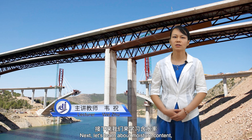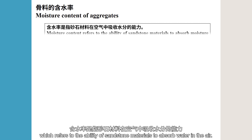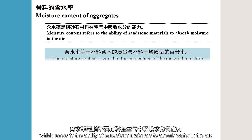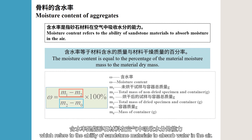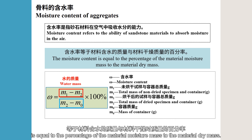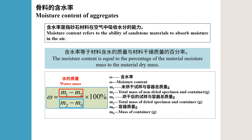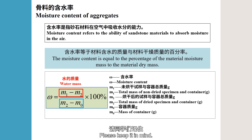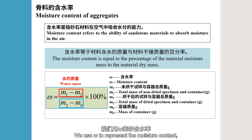Next, let's learn about moisture content, which refers to the ability of sandstone materials to absorb water in the air. The moisture content is equal to the percentage of the material moisture mass to the material dry mass. This formula is very important — please keep it in mind. We use omega (ω) to represent the moisture content.